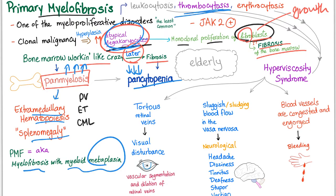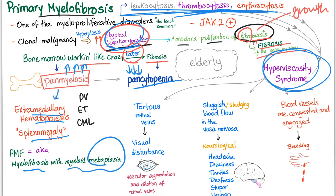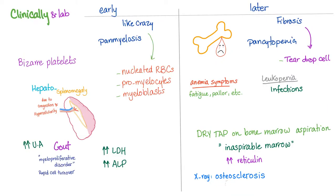When these cells are increased in the blood early in the course of the disease, you can have hyperviscosity syndrome with its classic symptoms: visual disturbance, neurological problems, and bleeding. We divide the clinical picture and labs into early on versus later — early on the marrow is working like crazy, and later there is fibrosis.